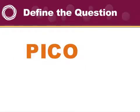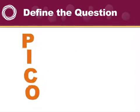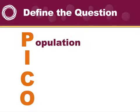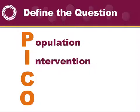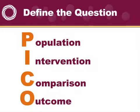In clearly defining the question, we're looking at a formulation called PICO. PICO stands for P — the population of interest; I — being clear about what the intervention is that you're curious about; C — what the comparison is; and O — what outcome does it make.